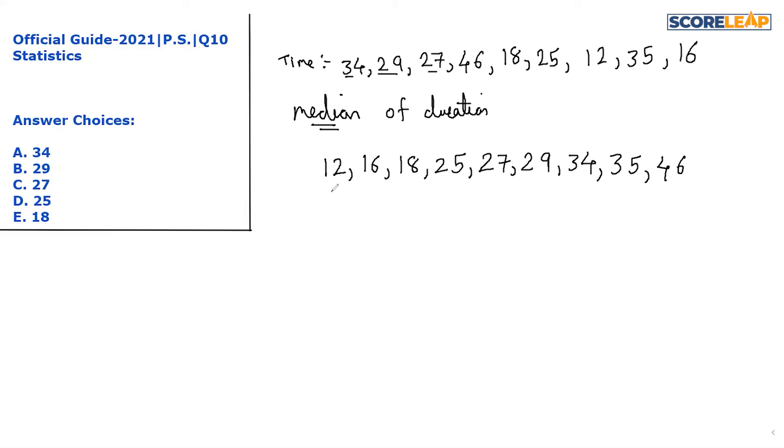Now we have a total of nine data, nine data, okay? So whenever the number is odd, then median is given by (n+1)/2 term, which is equal to (9+1)/2.